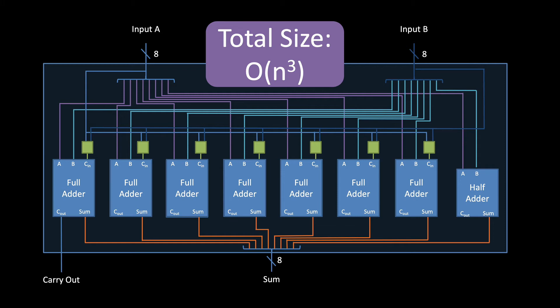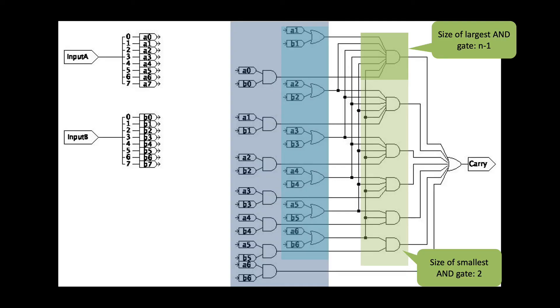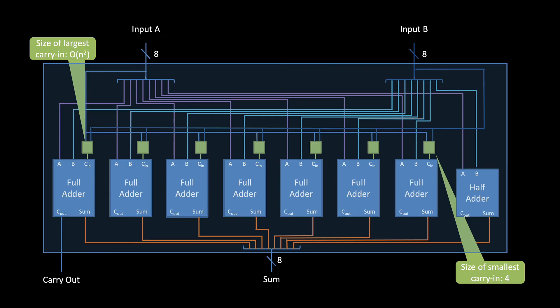Now, I'm hearing some objections that N cubed is way too big. After all, these AND gates get smaller as you move down the column, where the last AND gate only has two inputs. And likewise, the carry-in logic gets smaller as you move left to right, where the rightmost carry-in logic only has four gates in it total. So, common sense should say that this shouldn't be that bad, right? All of those small components have to help us out somehow.